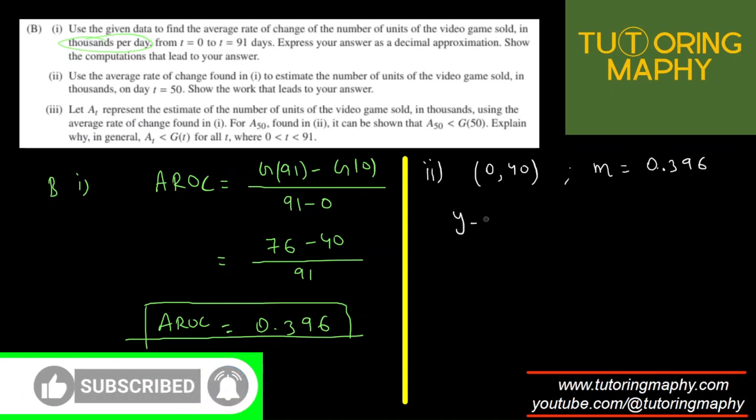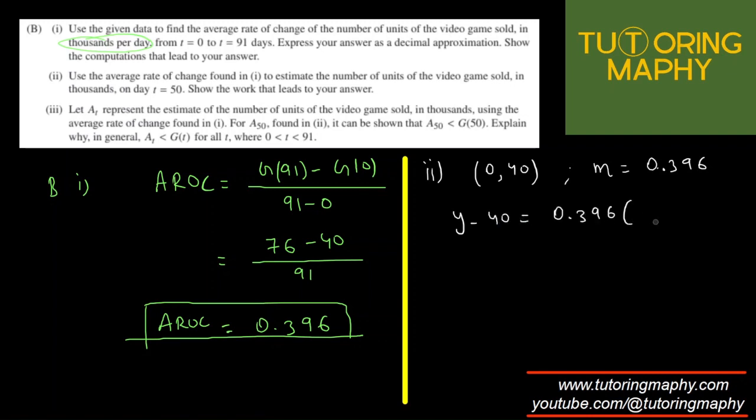So the equation is Y minus Y1. Y1 is 40, is equal to M, which is 0.396, times X minus X1, or X minus 0. So in this world, Y is G, G minus 40, is 0.396, and X is just T. So the value of G comes out as G is equal to 40 plus 0.396T, and all we need to do is plug in T as 50. So the value of G comes out as 0.396 times 50.